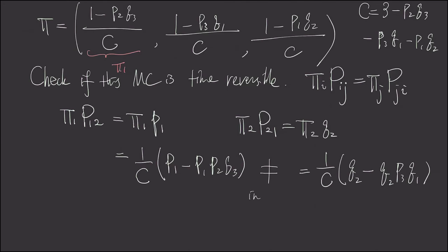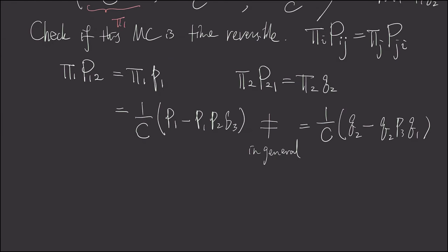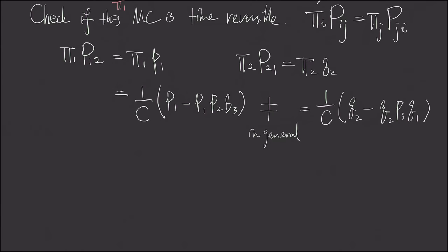And in general, they are not equal. So unless we have P1 equals Q1, Q2 equals P2, and P3 equals Q3. In general, these two are not equal. So it's not time reversible.